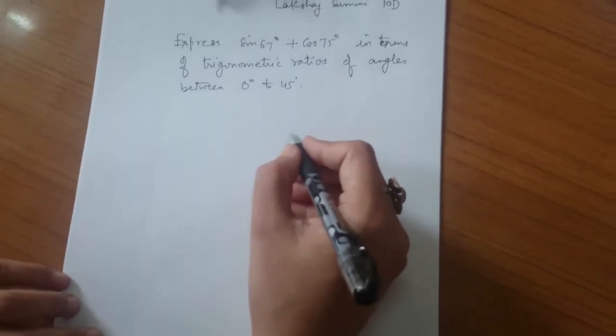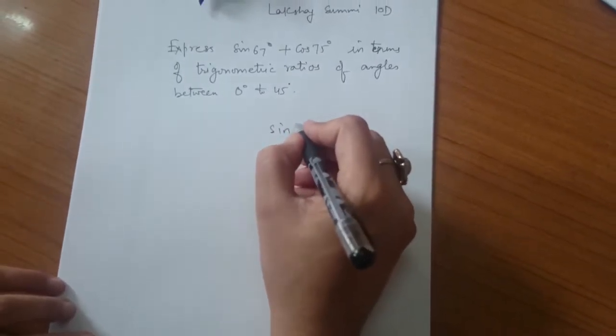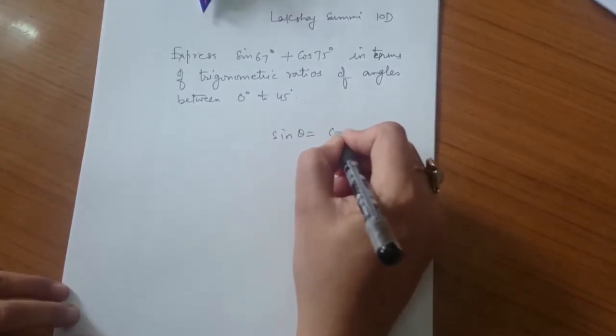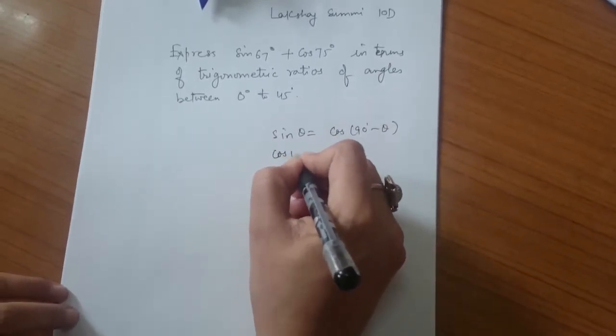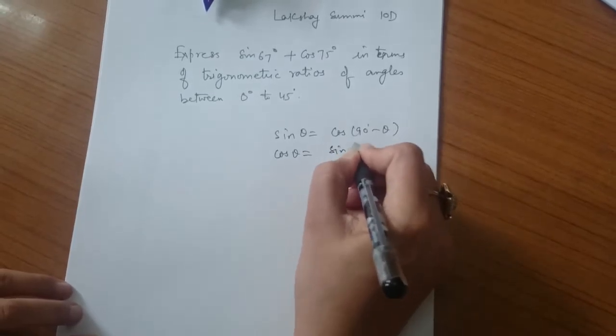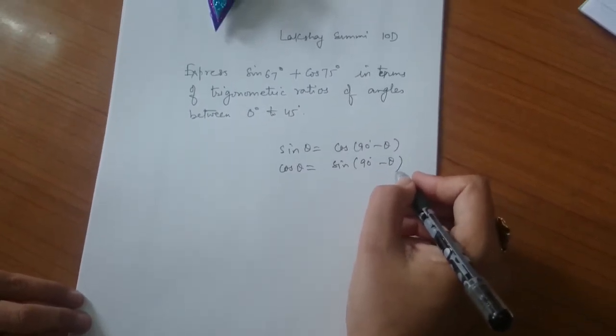We know that sin θ equals cos(90° - θ), and cos θ equals sin(90° - θ). These are complementary angle laws.